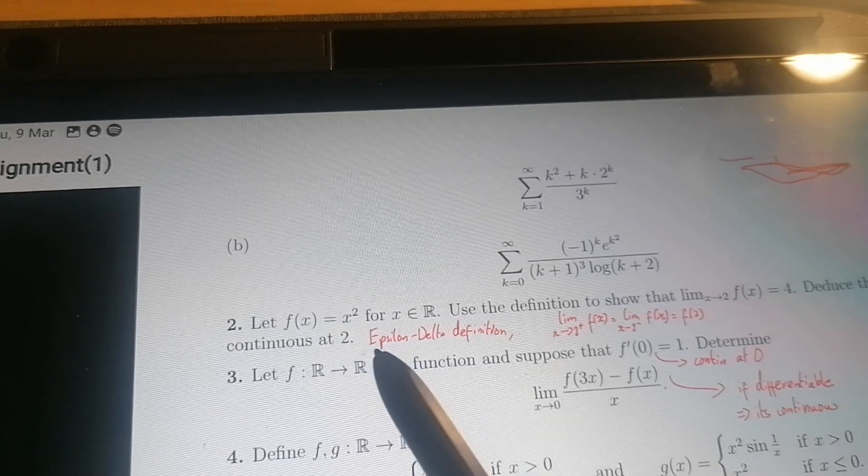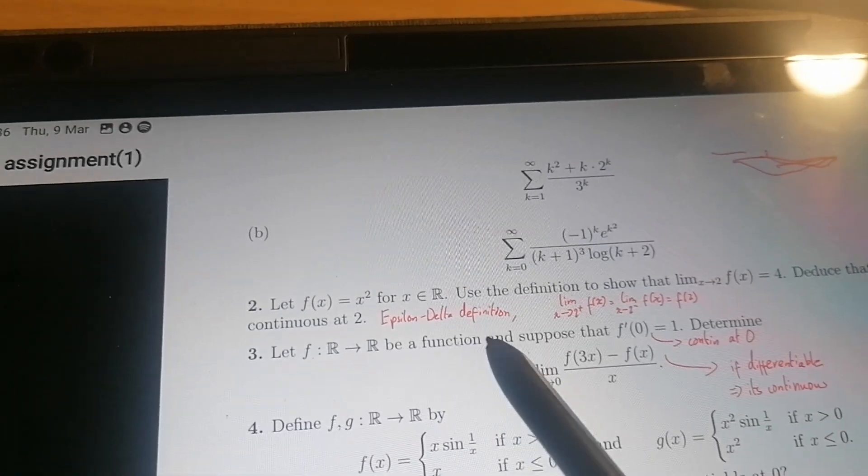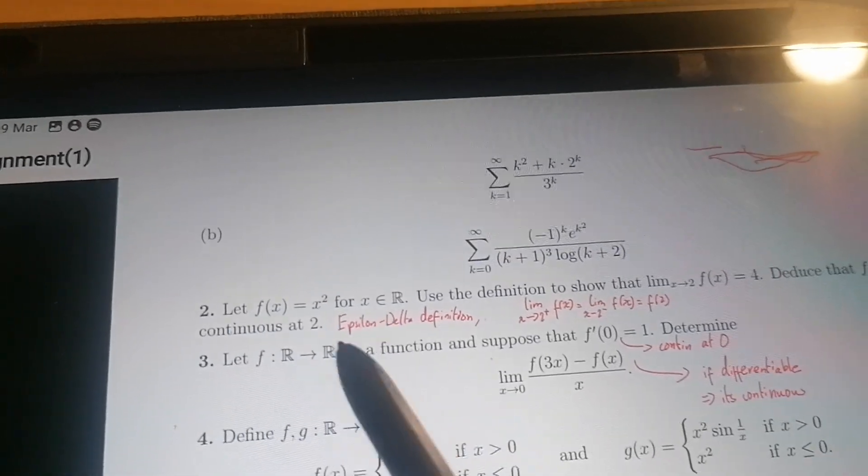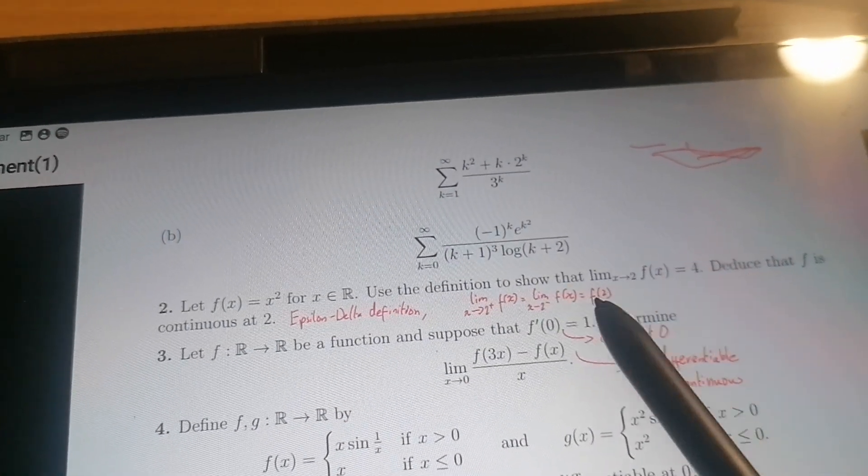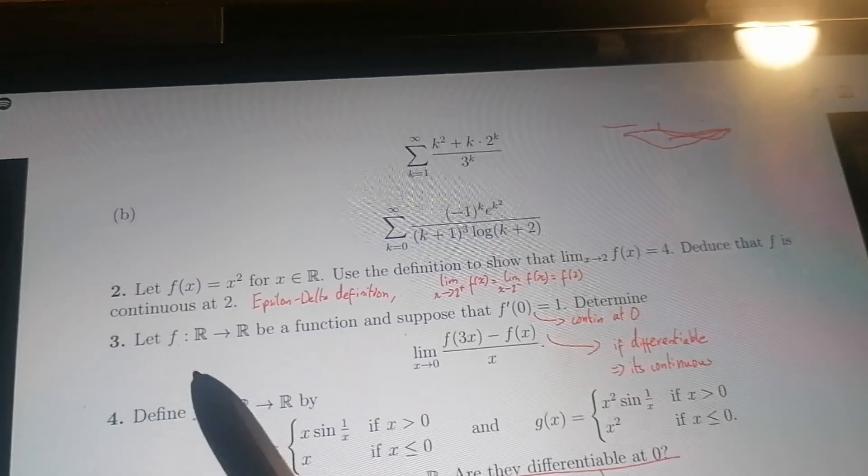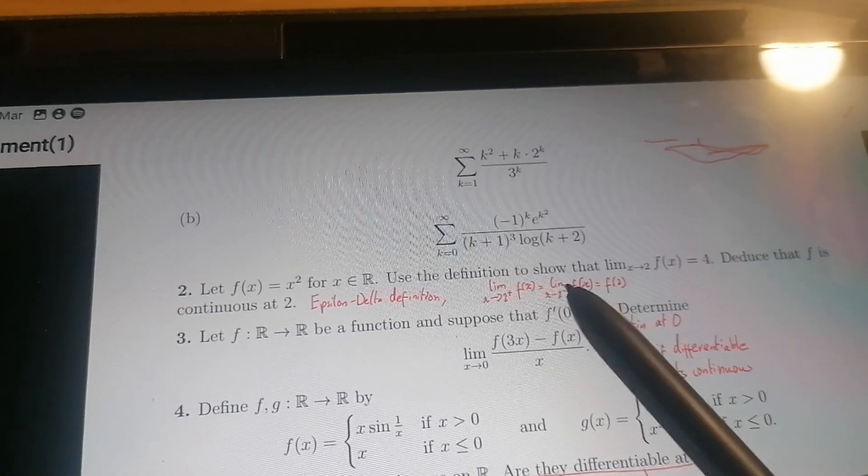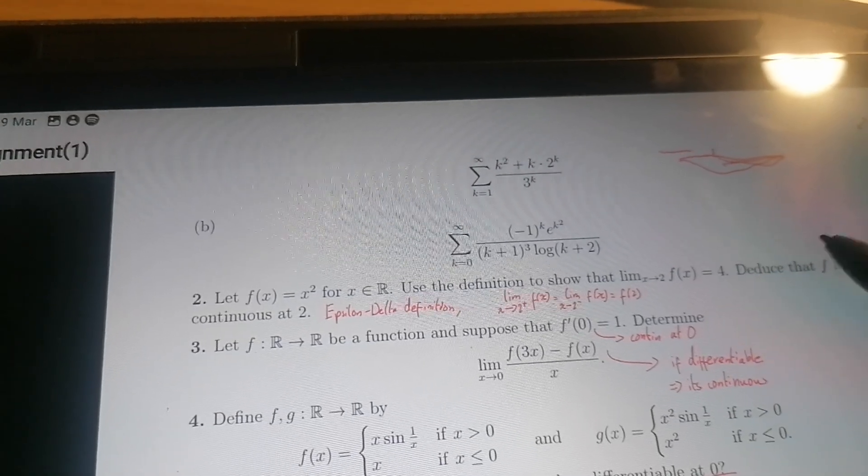Number two - epsilon delta definition. I'm definitely going to use the epsilon delta definition for the first part. Then for deducing that f is continuous at two, I'm just going to show that when you approach x equals two from both sides on the x squared graph, the limit is four, and then f of two obviously is two squared which is four.